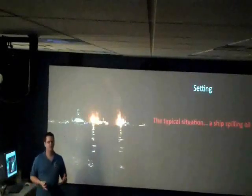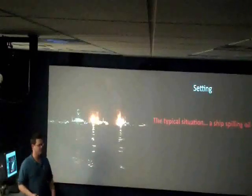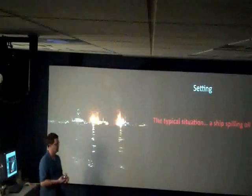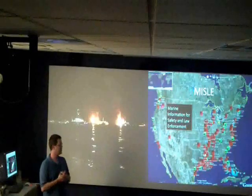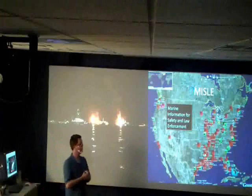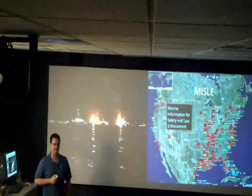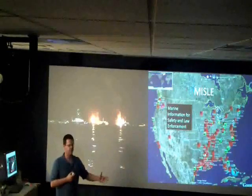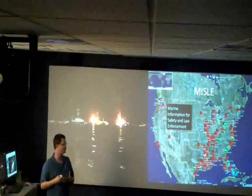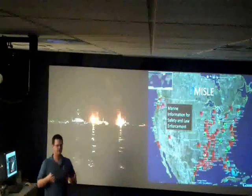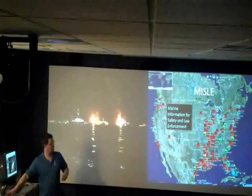Let's think about the typical situation that people train for with spill response. Typically it's a ship that has some sort of problem, dumps some oil in the water, and you go deal with it. MISLE is the Coast Guard incident response tracking system — it's protected, so I've never actually seen the real front screen of it. But out of it comes a list of incidents: spills, collisions when ships run into something, or fires on ships. These are things that dump oil and other materials in the water. We've got a pretty good handle on these — they occur fairly often.